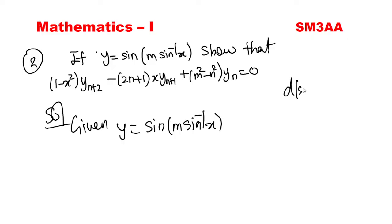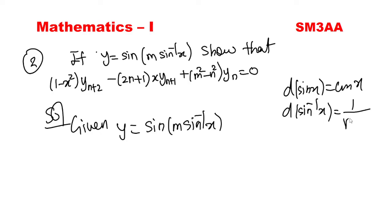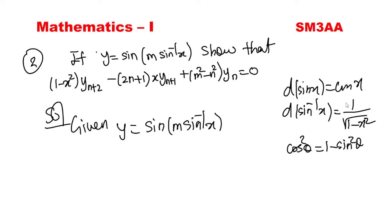One is differentiation of sin — differentiation of sin is cos x. And the differentiation of sin⁻¹(x) formula is 1 by root of (1 minus x²). The third formula is the trigonometric identity: cos²θ equals 1 minus sin²θ. These are the three formulas we need.